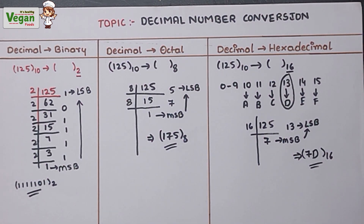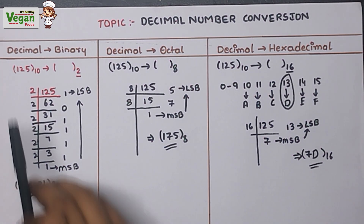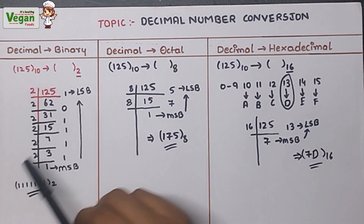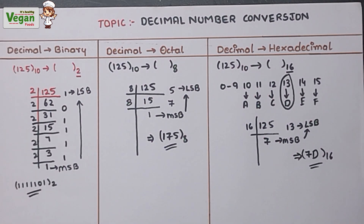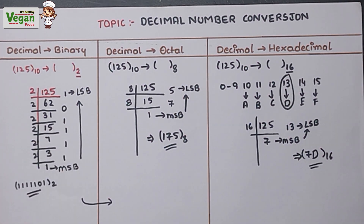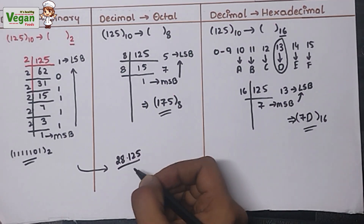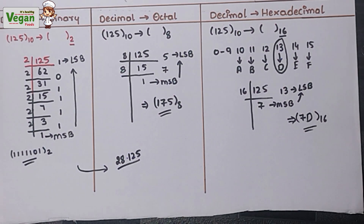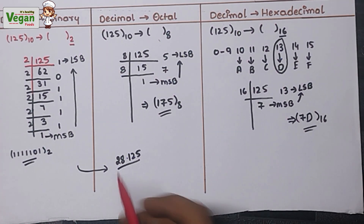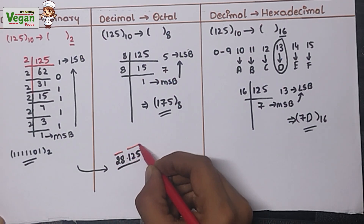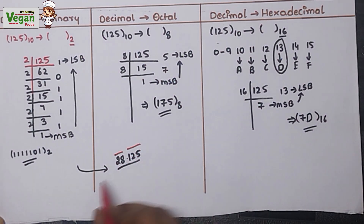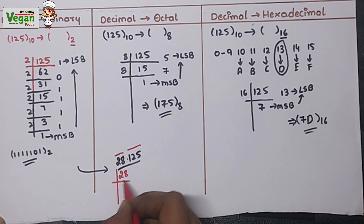Now let's consider the case when a floating value is given. Let's convert the decimal floating value 28.125 to binary. We consider 28 and 0.125 separately. For the integer part 28, we use the same division method — divide by 2 since we are converting to binary.